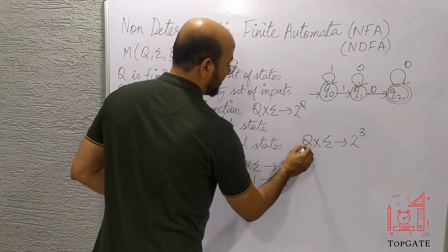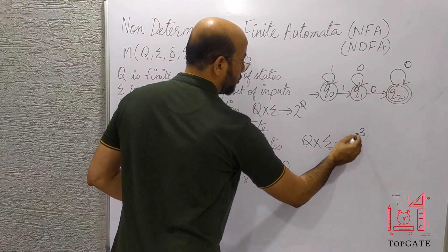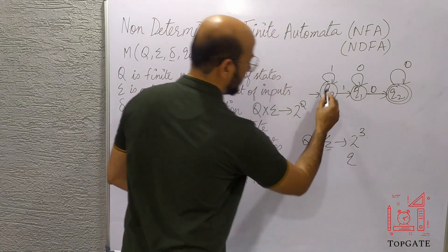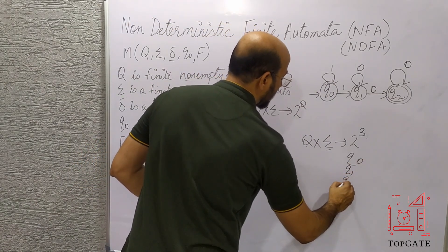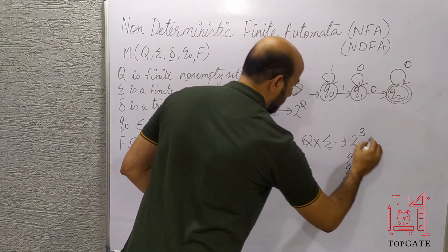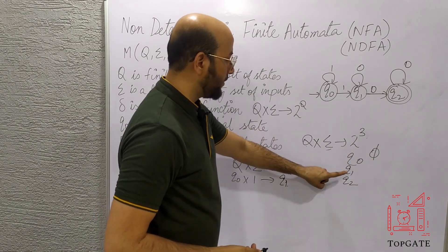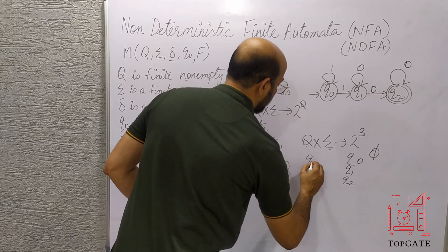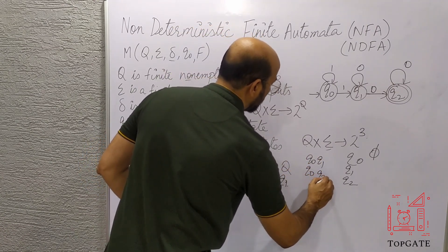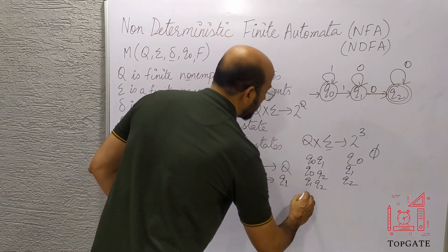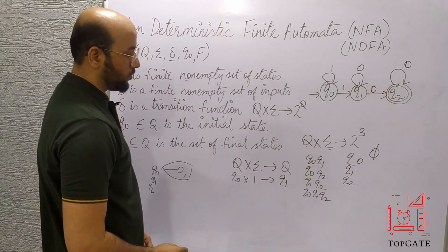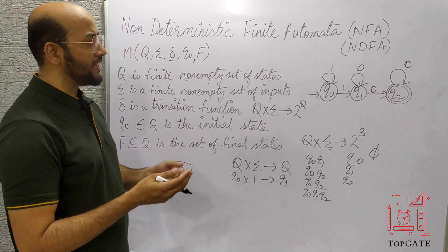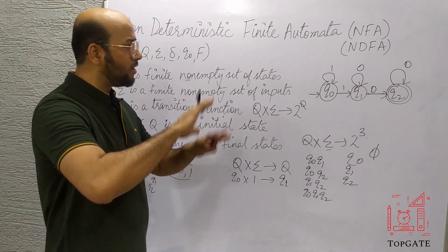Whenever we are on any state Q and any input alphabet is applied, we have 2 to the power Q options — that is, power set of Q options we can go to. For example, if Q has three states Q0, Q1, Q2, then 2 to the power 3 is 8 options. We can go to: phi (dead state), Q0, Q1, Q2, {Q0,Q1}, {Q0,Q2}, {Q1,Q2}, or {Q0,Q1,Q2}. That is 8 total options. For a single input, I can go to any of these 8 options.